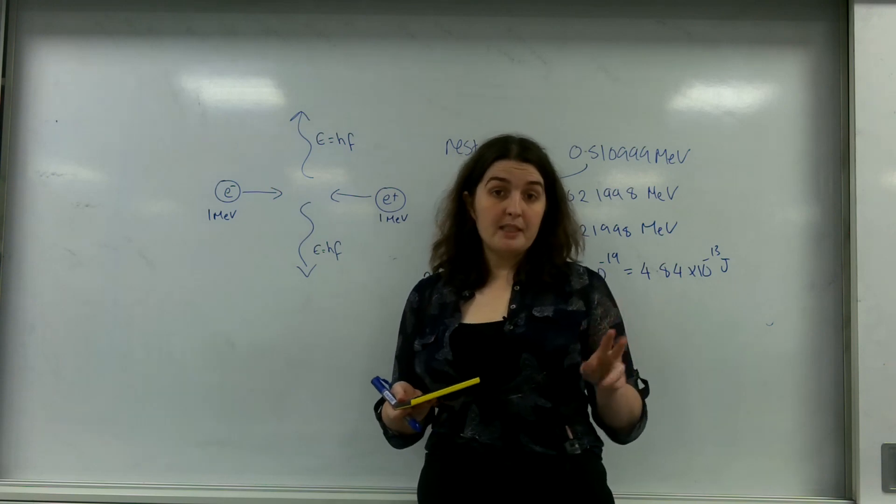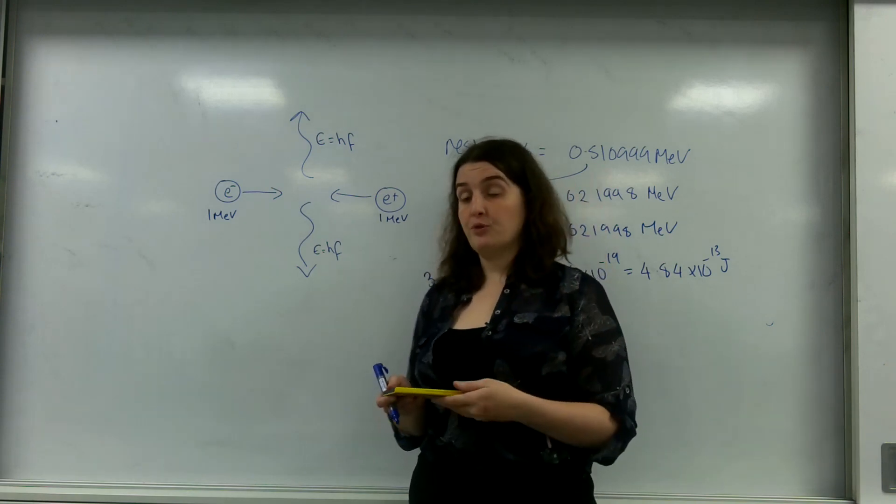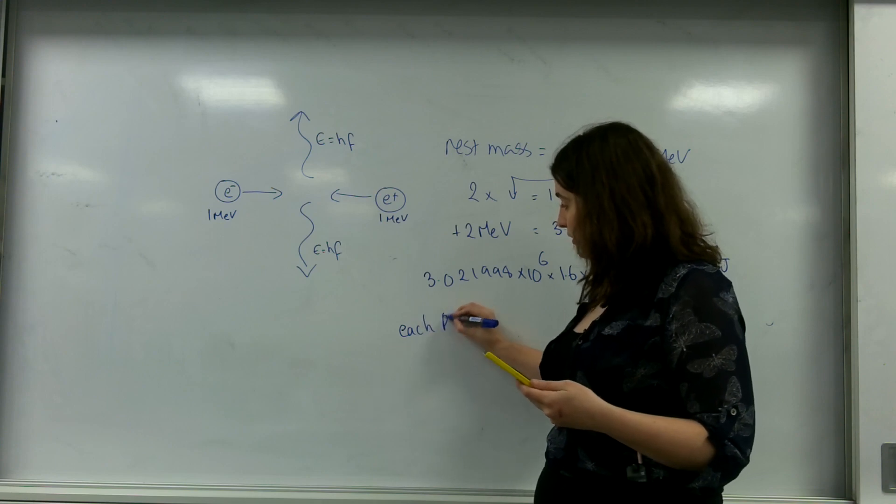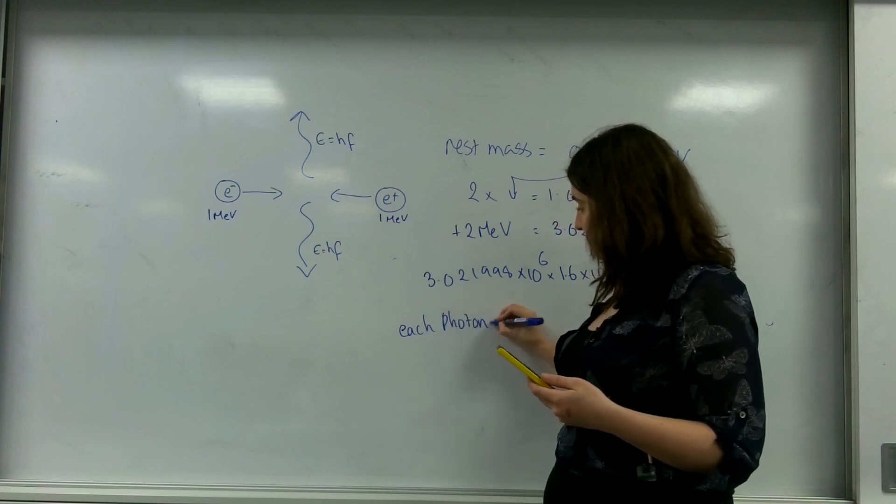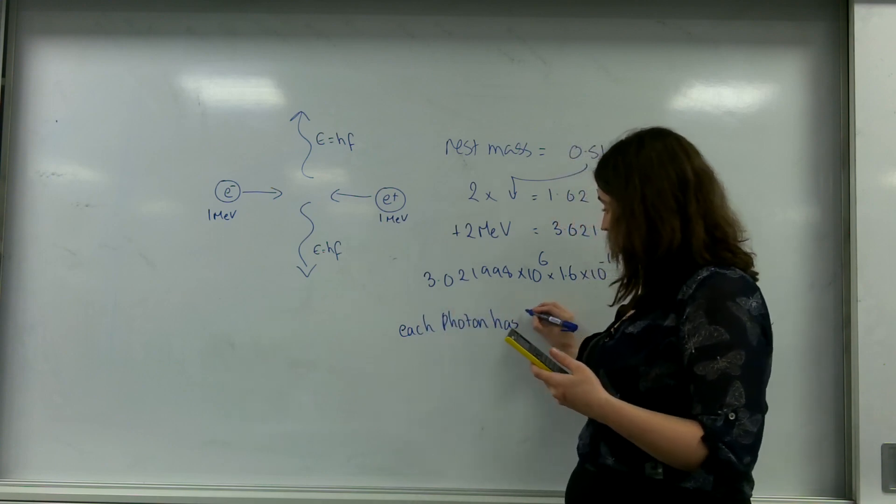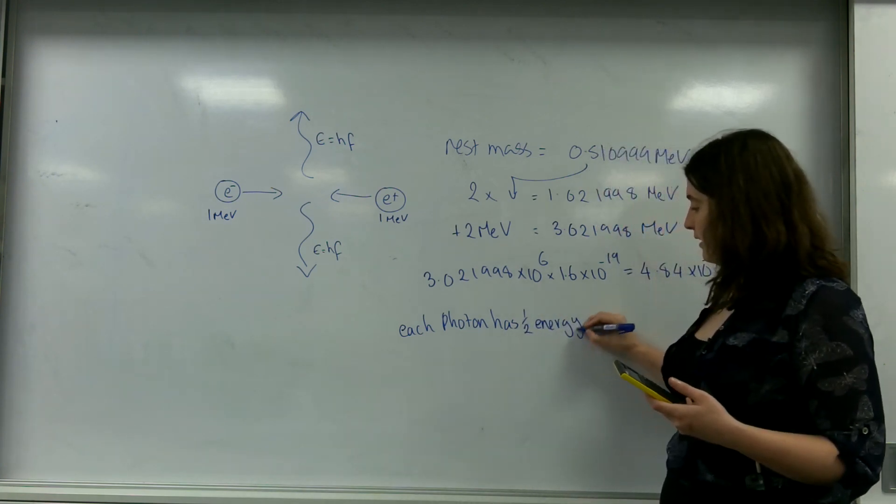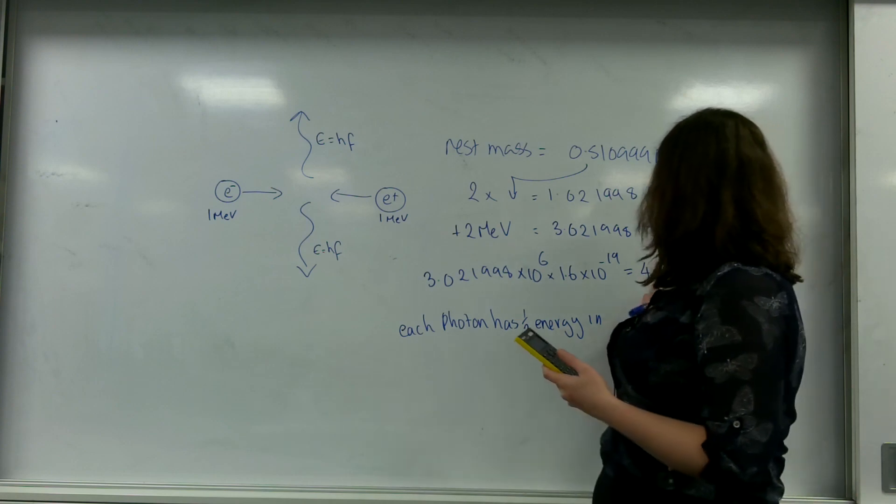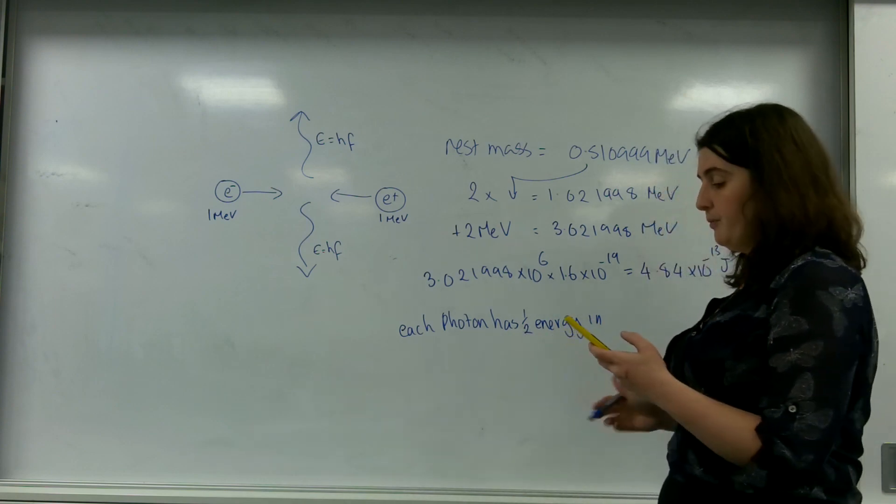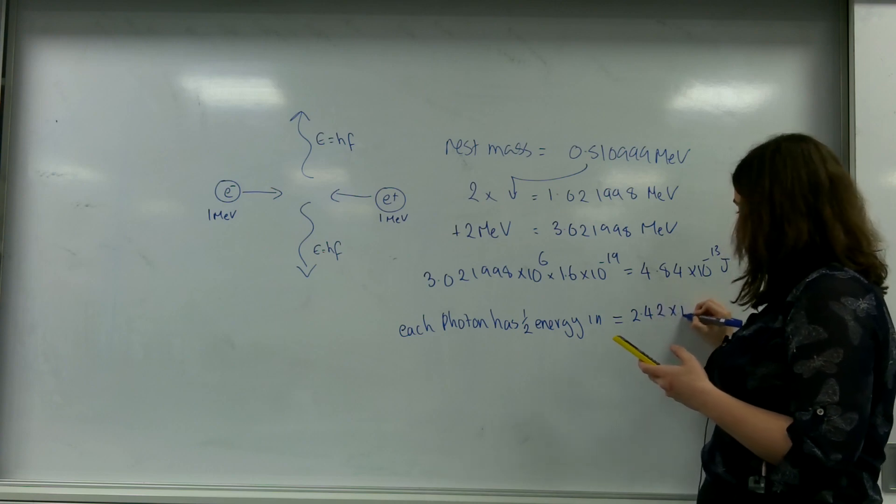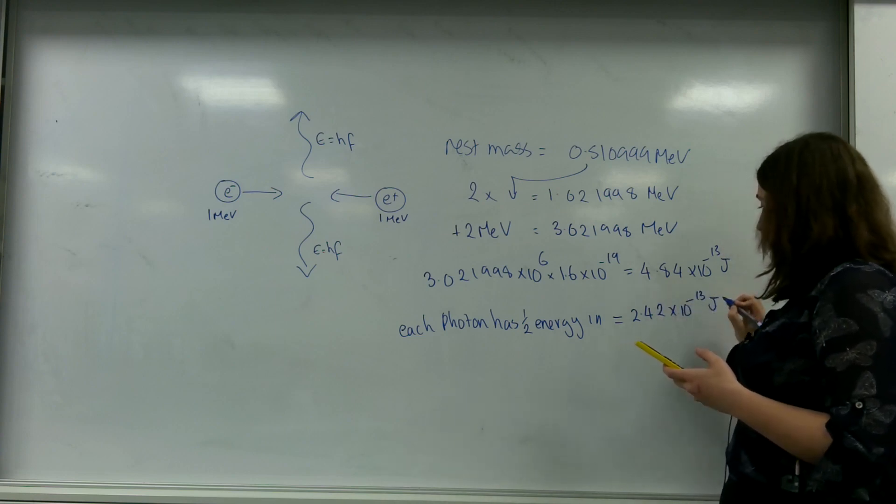This will be split between two photons. So each photon has half the energy in. So divide that by 2, and I have 2.42 times 10 to the minus 13 joules.